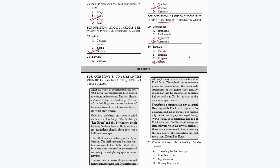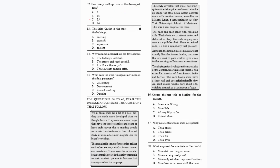Now let's move to the second section — reading passages. For questions 31 to 35, read the passage carefully and answer the questions. The best title for this passage is 'History Uncovered.' Question 32: How many buildings are in the developed area? There are 35 buildings, so option C is your correct answer.